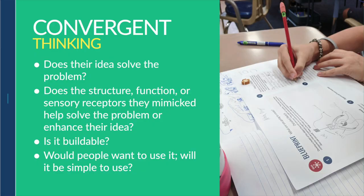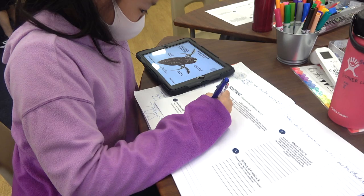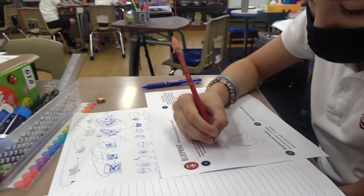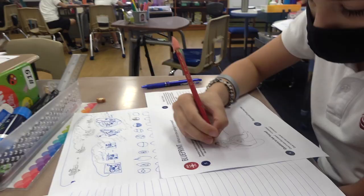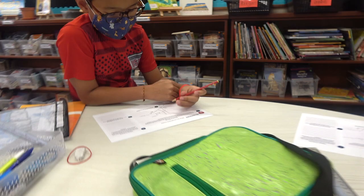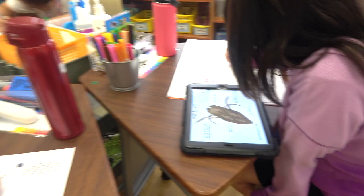Now it was time for the blueprint, where students map out exactly what they wanted to create. However, it was difficult for Tracy and I to approve blueprints because it was hard to understand the context of the idea students had. We saw detailed sketches, but it was hard to know what problem they were working on or what animal or plant structure, function, or sensors they were mimicking. So we created a graphic organizer attached to the blueprint so that Tracy and I could read the context before looking at the blueprint.